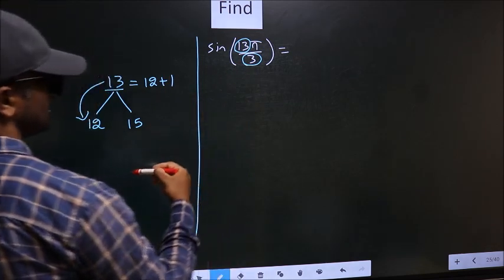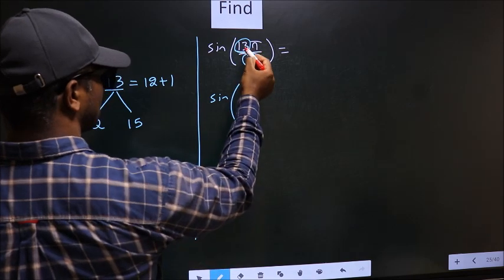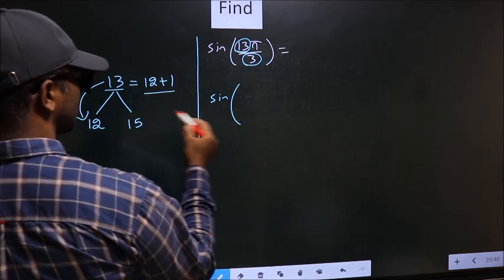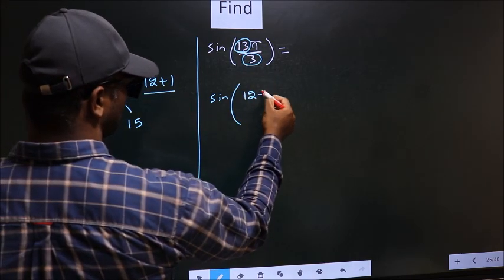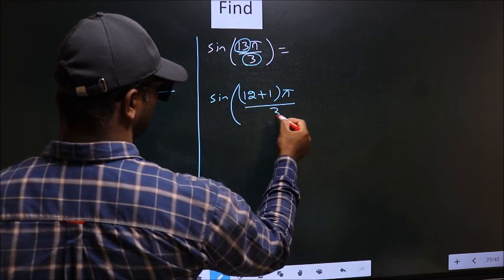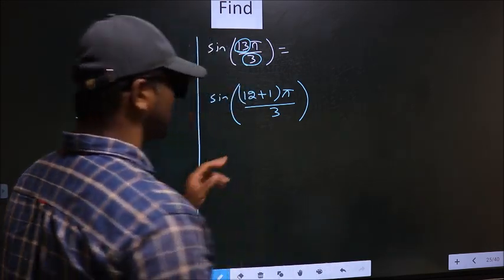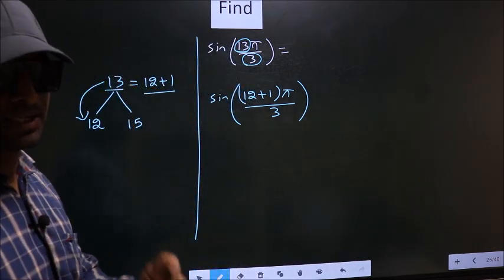So this will change to sine. In place of 13, now we write this: 12 plus 1 pi by 3. This is your step 1.